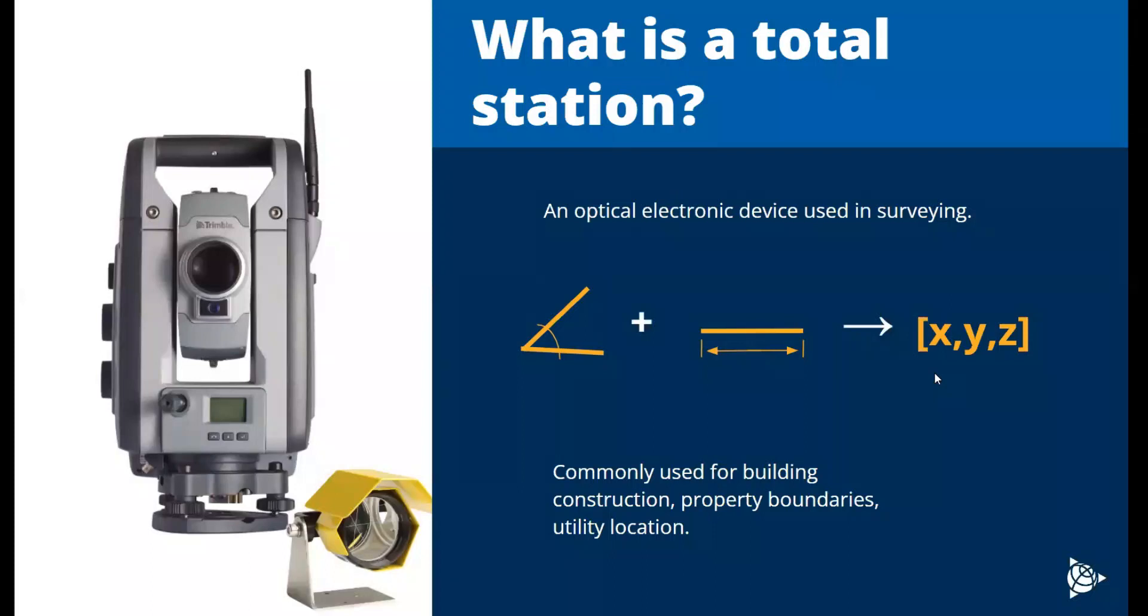A total station is really simple in principle. It's an electronic and optical device used in surveying. What they do is use angles and distances to measure some sort of XYZ or coordinate component for some target.